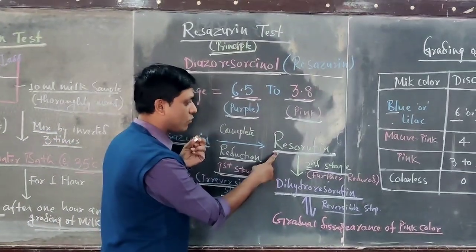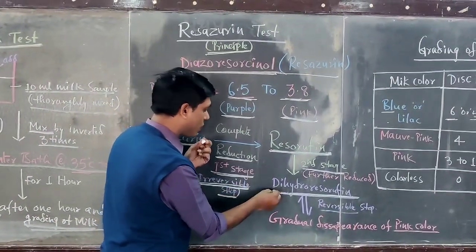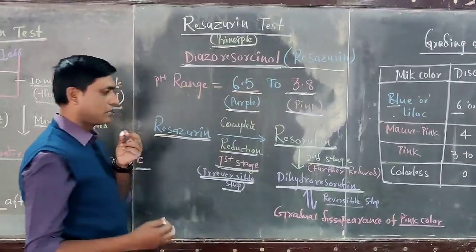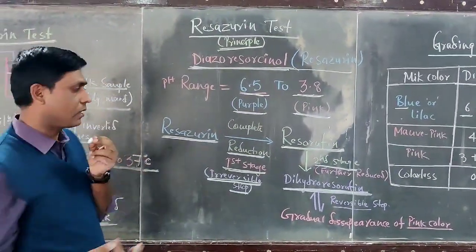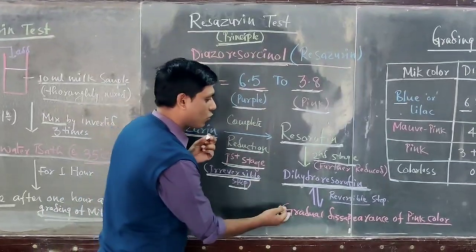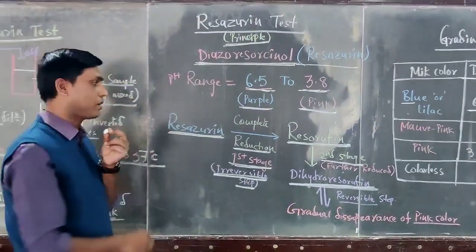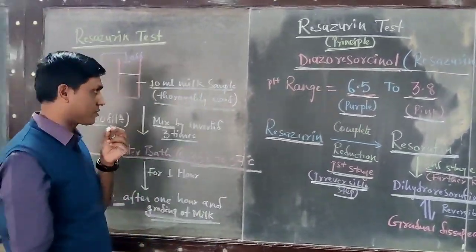In the second stage, resazurin white is further reduced to dihydroresorufin white, showing gradual disappearance of pink color. This is a reversible state. This is the principle of the resazurin test.